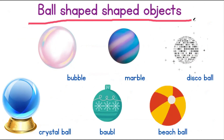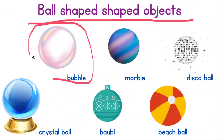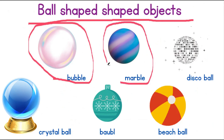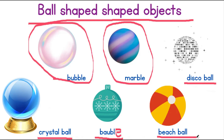Ball-shaped objects. Here are a few ball-shaped objects that you may see around you. This is a bubble — we all love blowing bubbles, don't we? This is a marble. A marble is also a ball-shaped object. A disco ball. A crystal ball. A bubble. A beach ball. These are six different ball-shaped objects.